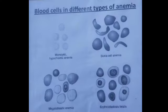So let's check the topics. This is called physiology. And next, blood cells in different types of anemia.